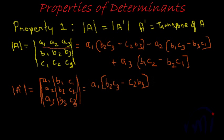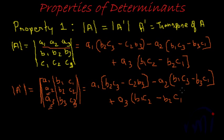Now, if I expand minus A2, the next term would be from here, minus A2. It will be minus A2, B1, C3, B1, C3 and B3, C1 minus B3, C1. And the third term, which is this, A3, A2, B1, C2 minus B2, C1.